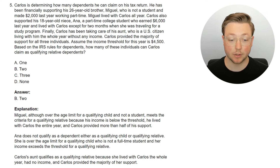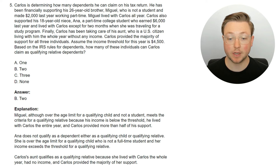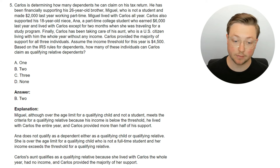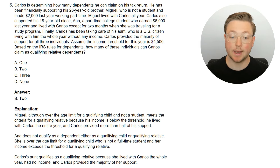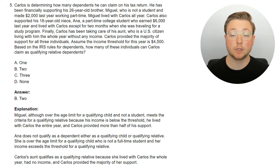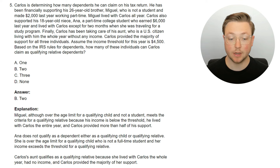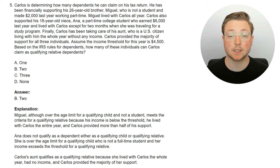Only two of them can be counted as qualifying relatives. Miguel, although over the age limit for a qualifying child and not a student, meets the criteria for a qualifying relative because his income is below the threshold, he lived with Carlos the entire year, and Carlos provided more than half of his support. Ana does not qualify as a dependent — either as a qualifying child or a qualifying relative. She is over the age limit for a qualifying child who is not a full-time student, and her income exceeds the threshold for a qualifying relative. Also, because Ana is his niece and not his child, she can't qualify for the full-time student exception even though she is a student. Carlos's aunt qualifies as a qualifying relative because she lived with Carlos the whole year, had no income, and Carlos provided the majority of her support.